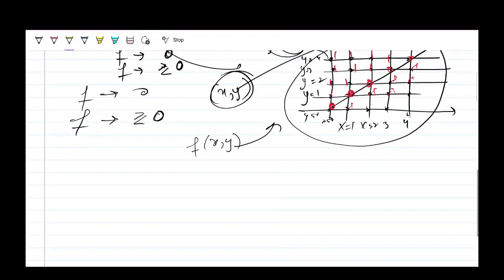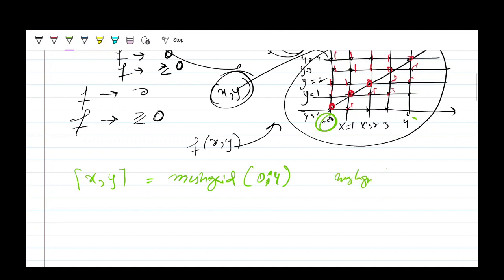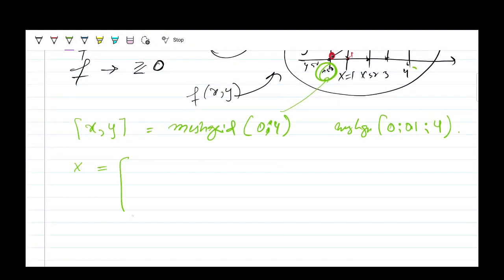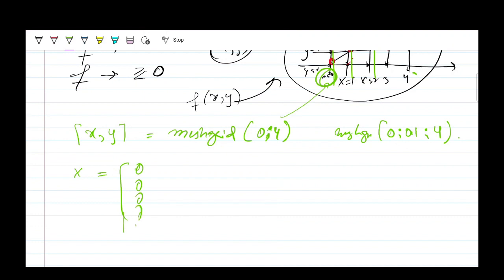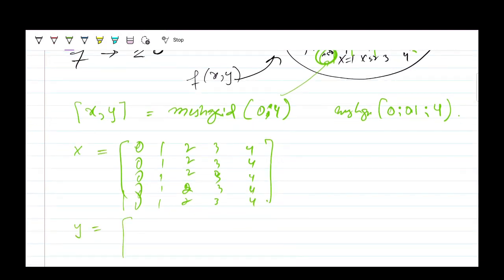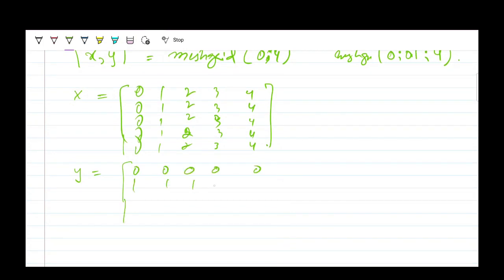In MATLAB, meshgrid is defined as [X, Y] = meshgrid(0:4, 0:4), with unit spacing between points. You can also specify custom spacing. The X matrix has columns repeating values like 0, 1, 2, 3 — parallel to the y-axis — and the Y matrix has rows repeating values — parallel to the x-axis.